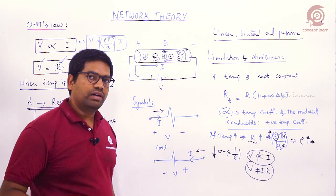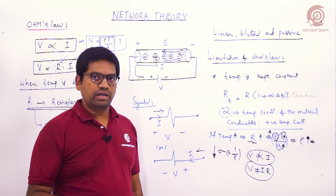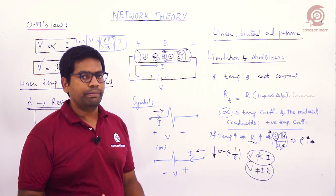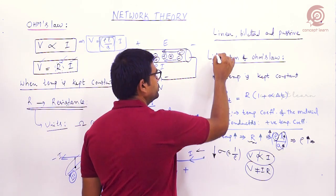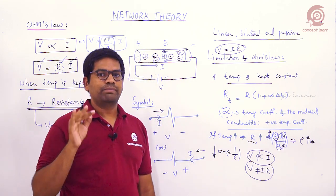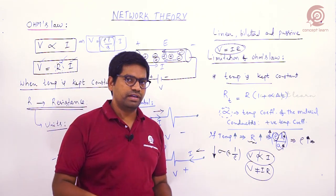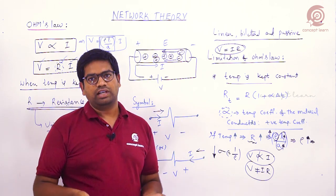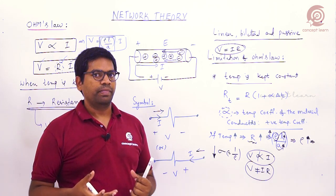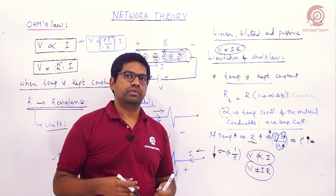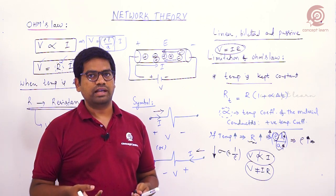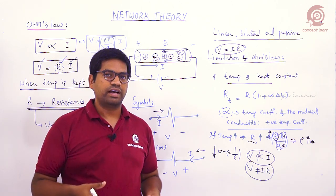When conductivity decreases, there is no longer proportionality between voltage and current. Even if you keep increasing the applied voltage, proportional current is not produced — V = IR no longer holds. Therefore, for V = IR to be valid, temperature must be kept constant. In the coming discussion, we will deal with voltage, current, power, and energy relations for basic circuit elements such as resistance, inductance, and capacitance.